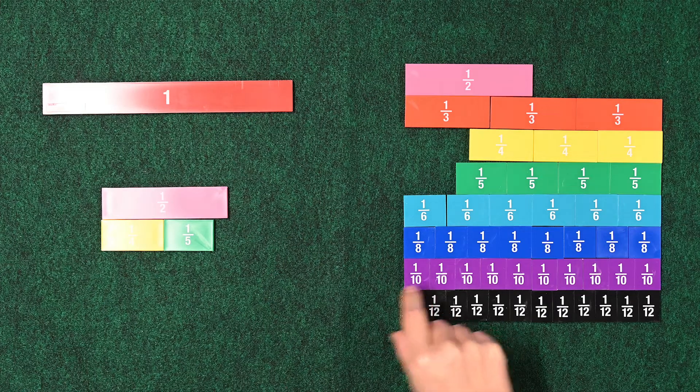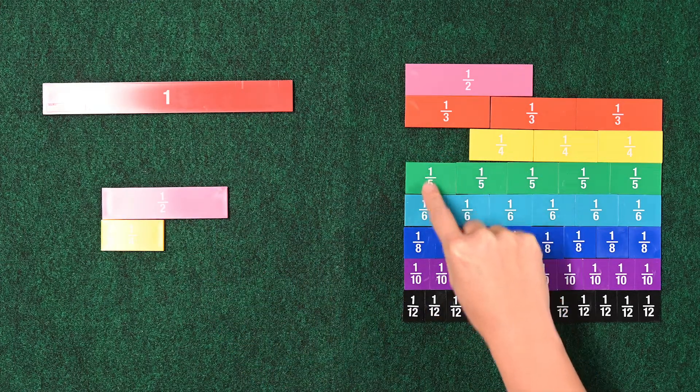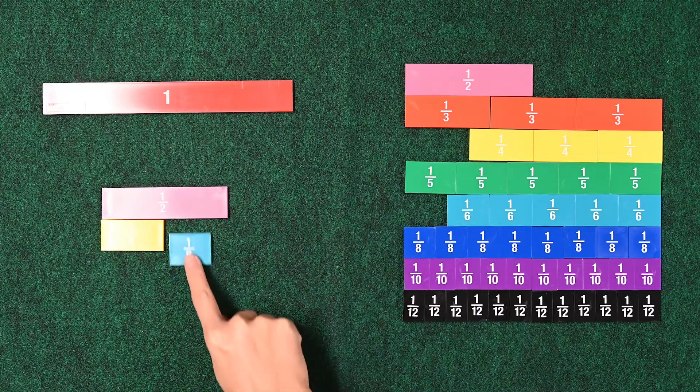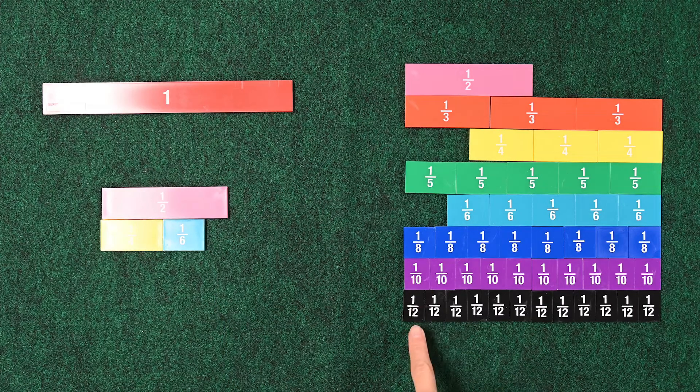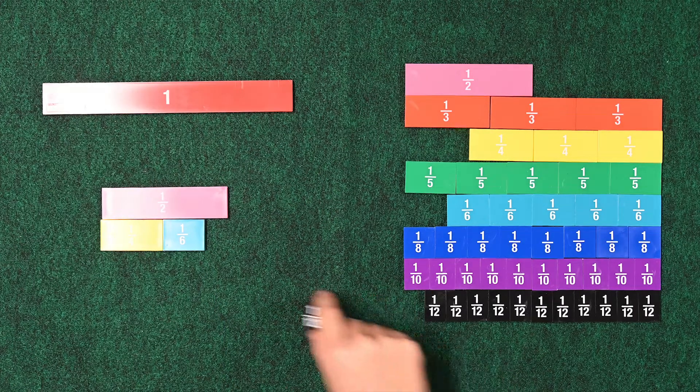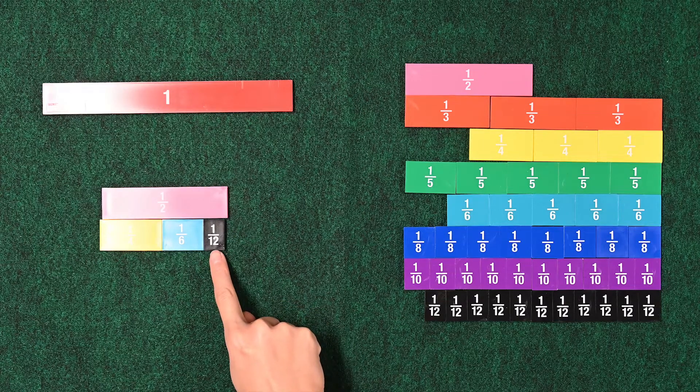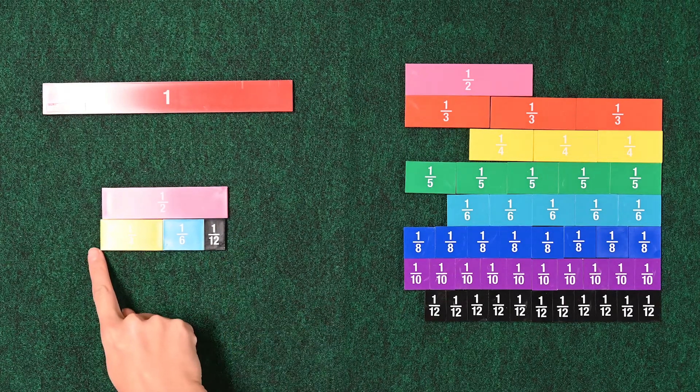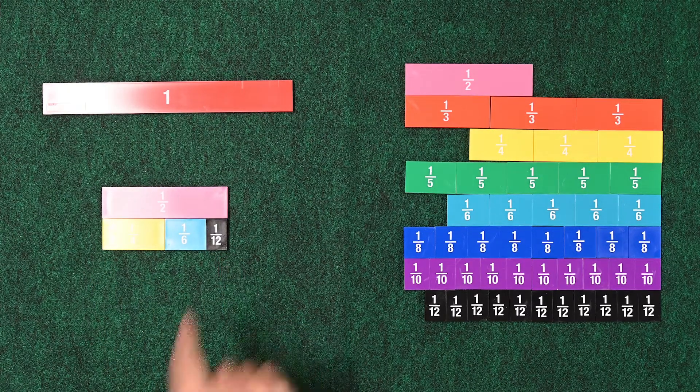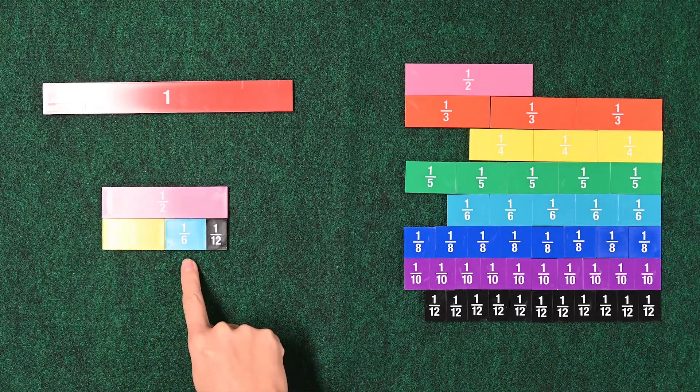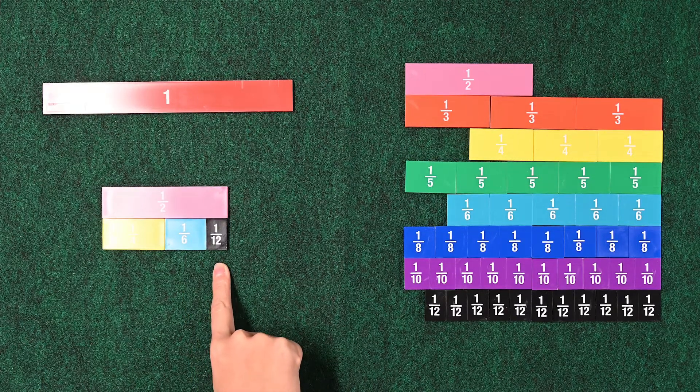1 12th goes back. The 1 fifth goes back. Let's try the 1 6th. 1 6th leaves a little room. And we can try the 1 12th. That's the smallest piece we have. Is that working? Ah, looks like it's working. Looks like 1 4th plus 1 6th plus 1 12th is the same as 1 half.